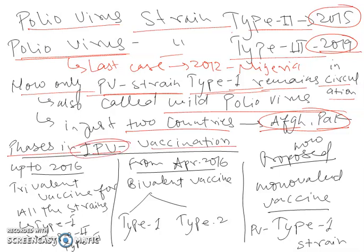Now let's talk about the phases in injectable poliovirus vaccination — IPV, injectable poliovirus vaccinations. We know that up to 2016, all three strains of poliovirus were in circulation, and this was the reason that a trivalent vaccine covering all three strains — type 1, type 2, and type 3 — was in use.